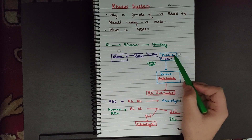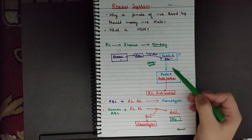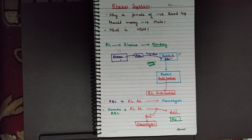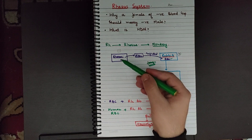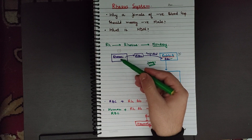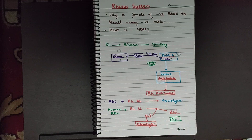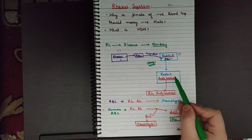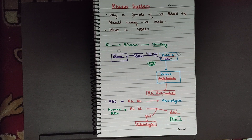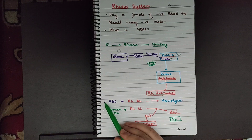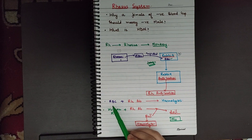These antibodies produced by the rabbit are against the Rhesus blood, so we call them RH antibodies. Now I isolated these RH antibodies from the rabbit. In the first case, I mixed the blood of the Rhesus monkey with these RH antibodies.